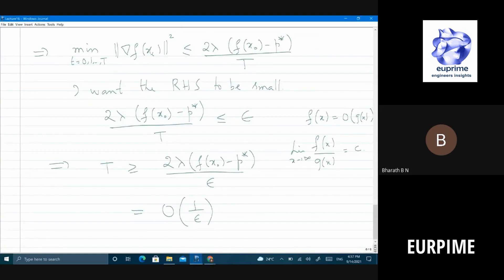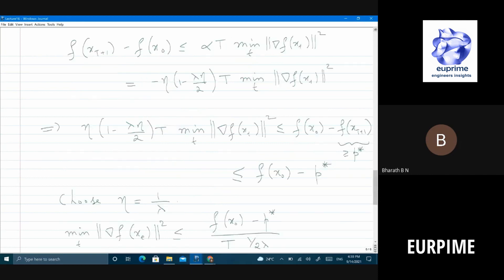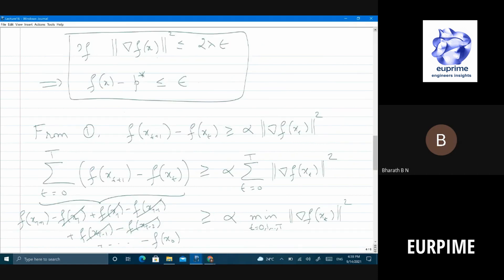You got what I am saying? This is a nice result - after so many steps we will have very small gradient. In fact, this says if I choose my gradient square to be less than or equal to 2λε, the gap is less than or equal to ε. That means if you want the gap to be within ε, what should I do?